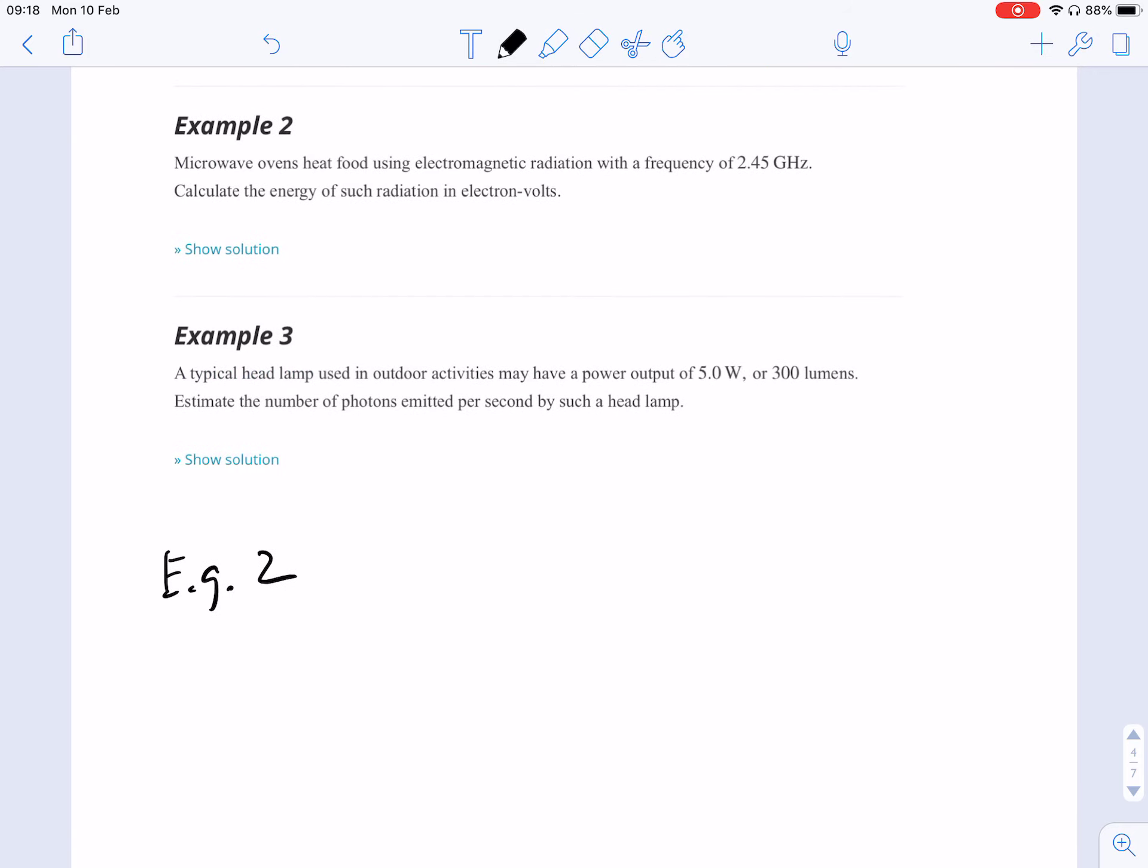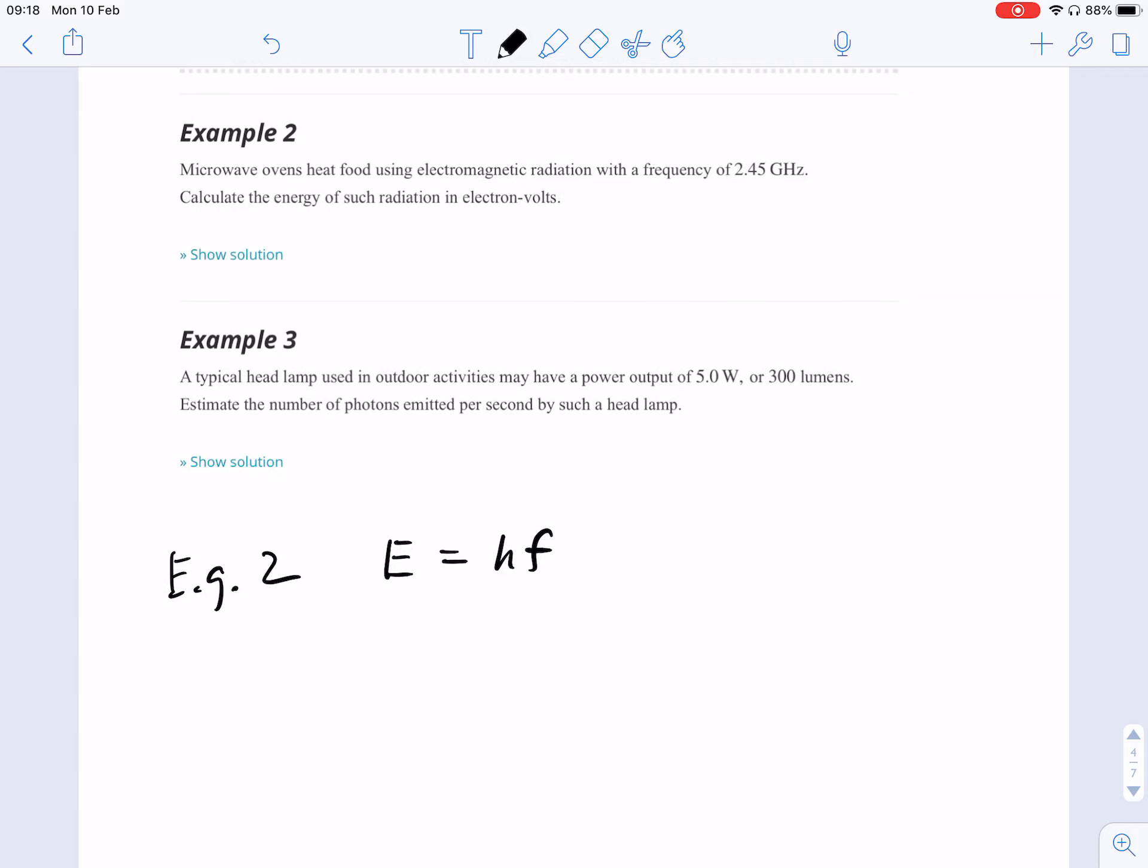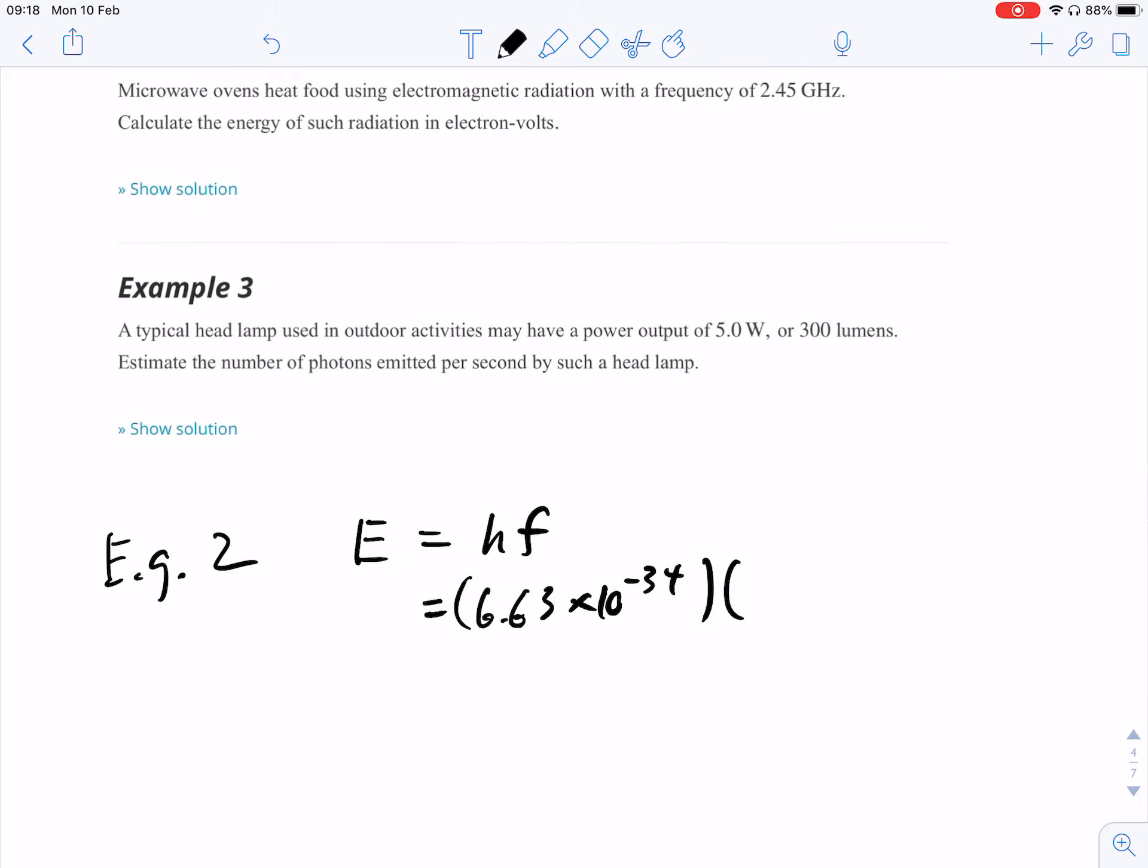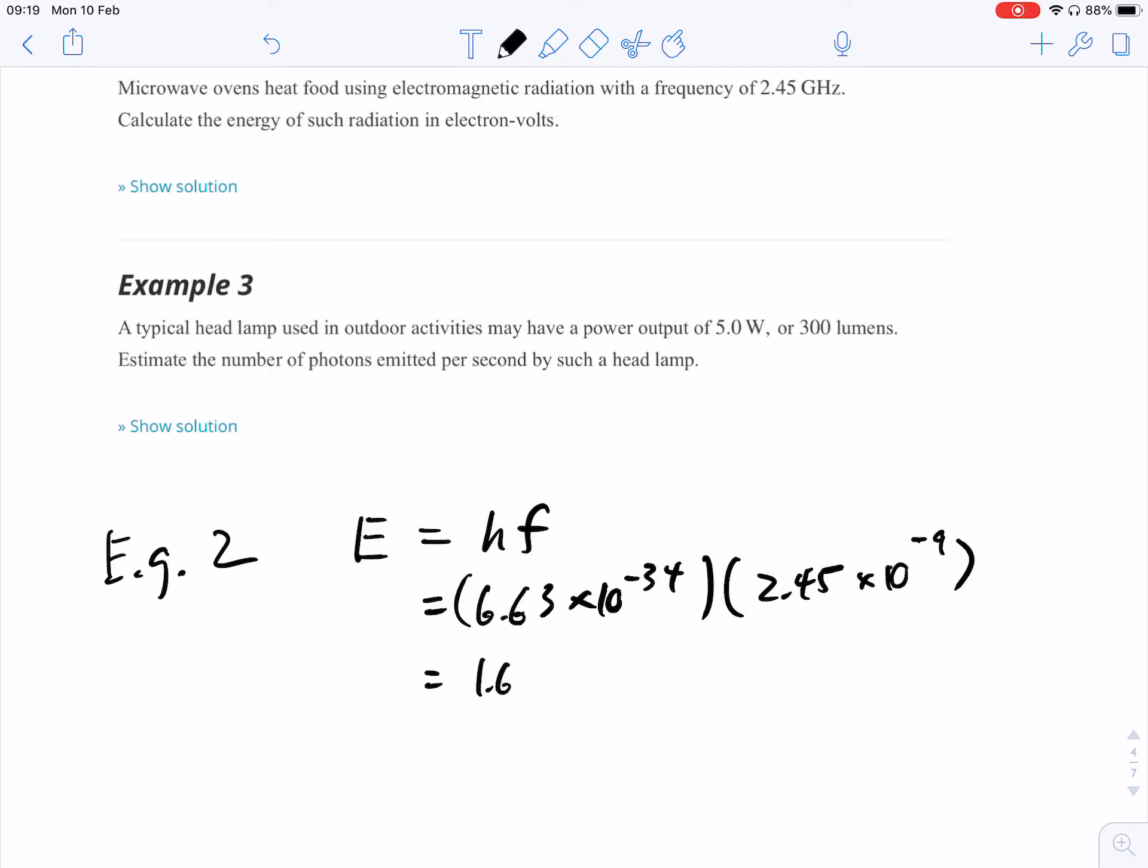So because we're given the frequency, we can actually use the shortened version of our formula. Because we've already got the frequency. We don't need to worry about the speed of light and things like that. So we just need Planck's constant. And so the energy given off is Planck's constant times the frequency. And so straight up substitution is Planck's constant, which is 6.63 times 10 to the power of negative 34. And we're multiplying that by the frequency, which is 2.45 gigahertz. Gigahertz is 10 to the power of 9. 2.45 million megahertz is 10 to the power of 6. So gigahertz is 10 to the power of 9. And you guys can obviously look this up. You don't have to memorize it.